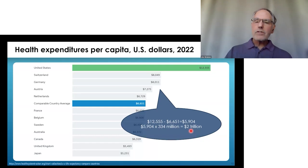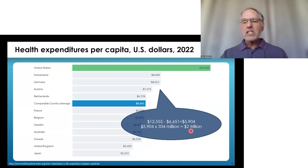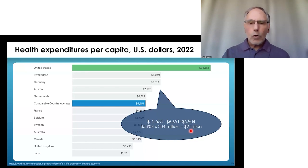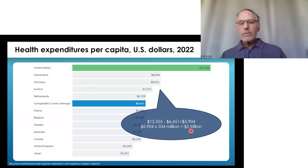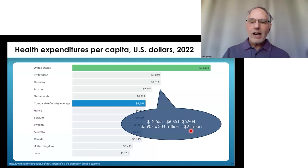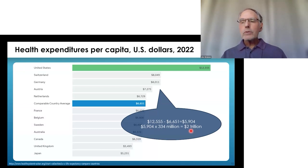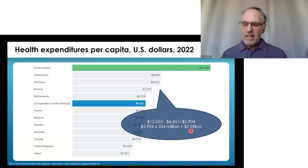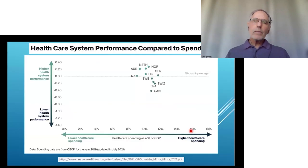To put $2 trillion in perspective: the annual U.S. budget deficit, which is enough to create political crises about funding the government, is $1.73 trillion a year — less than we're wasting on healthcare. $2 trillion is about two and a half times our annual military budget, and it's almost as much as total global military spending at $2.2 trillion a year. This is an enormous amount of money wasted to achieve horrendously inferior health for the American people.